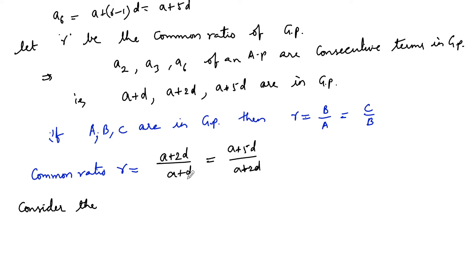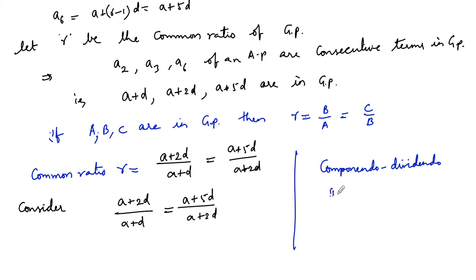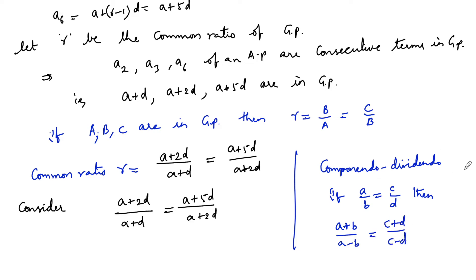We set up the equation: (a + 2d)/(a + d) = (a + 5d)/(a + 2d). We now apply the componendo-dividendo property, which states: if a/b = c/d, then (a + b)/(a − b) = (c + d)/(c − d).